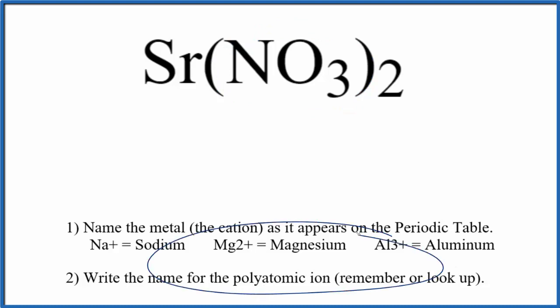We're going to use these rules to write the name. First we write the name for the metal, strontium, as it appears on the periodic table. Sr, that's just strontium.